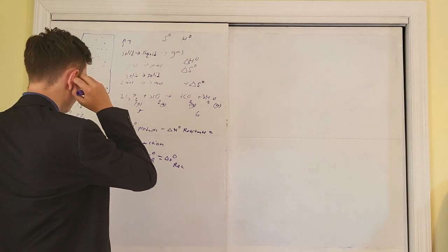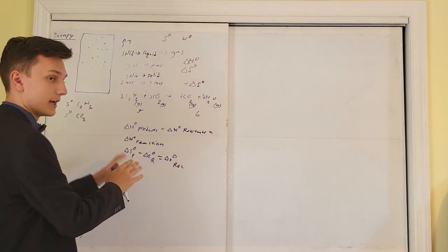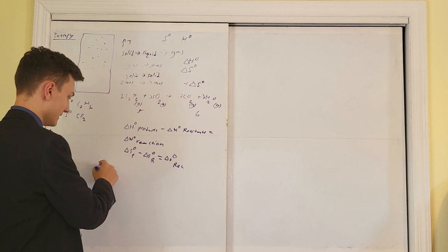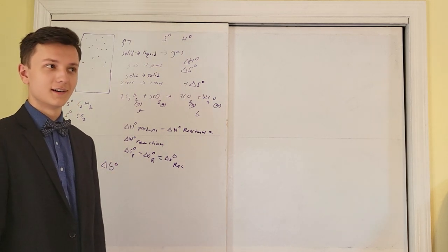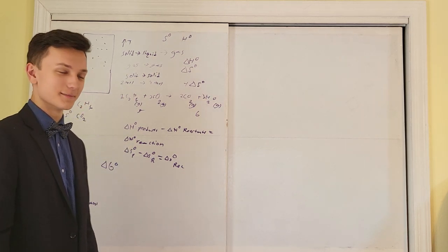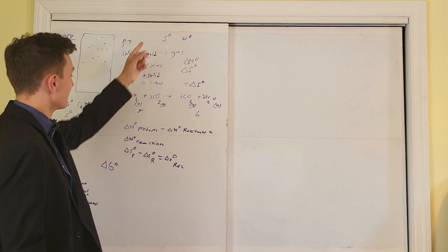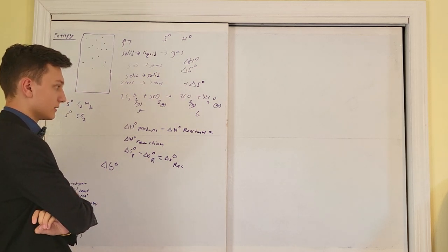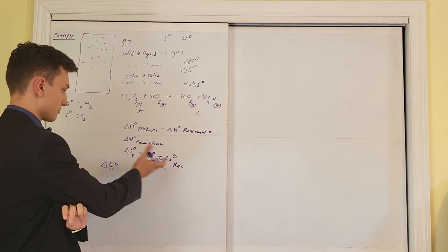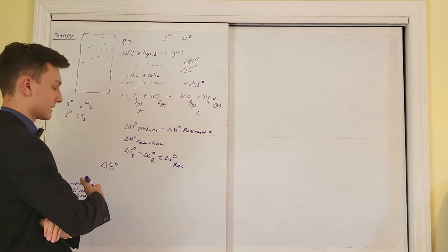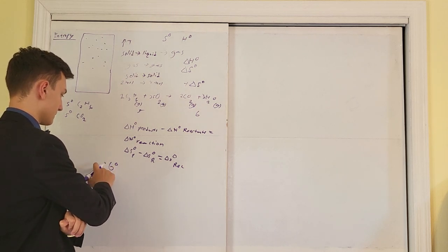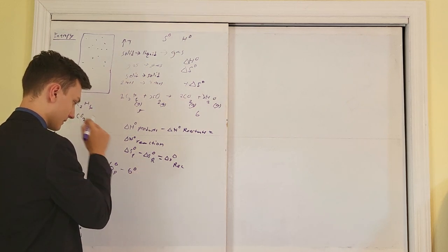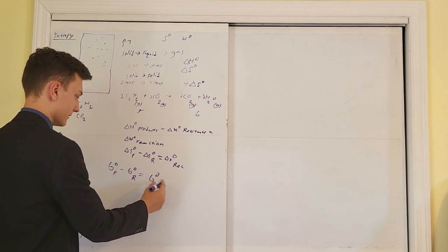Once we master entropy, we can come down to the real main topic in this unit — that's called delta G, or Gibbs free energy. Delta G abides by the same equation: ΔG⁰(products) − ΔG⁰(reactants) = ΔG⁰(reaction). If you're given a table of standard Gibbs free energy values for each species, you can calculate the Gibbs free energy of the reaction.